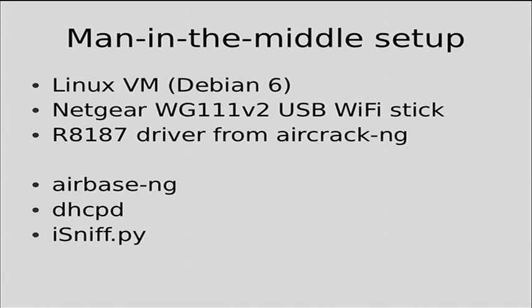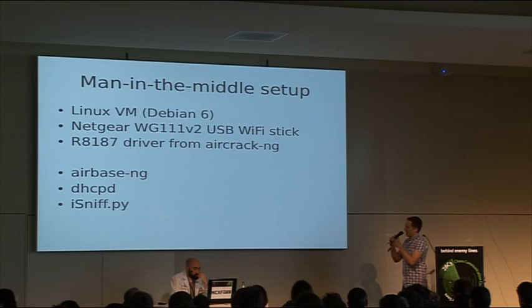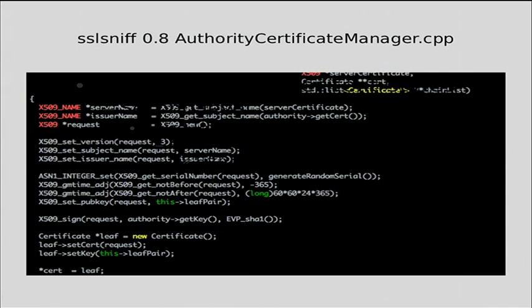I decided to do it myself in Python. The setup for that is just a Linux VM, a cheap $8 USB stick, Airbase-NG, DHCPD, and IP tables. Looking at the C++ code of SSL Sniff, after a lot of debugging I found that the issue with set version 3 was what was making it not work. I got SSL Sniff working, but it's C++ code — thousands of lines — and a lot of hassle to work with.